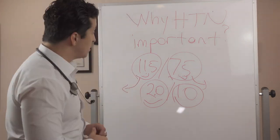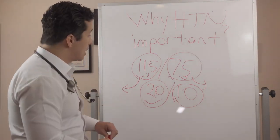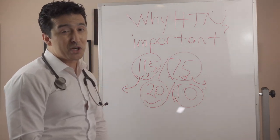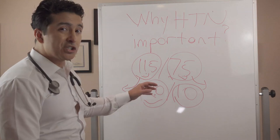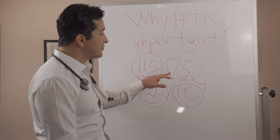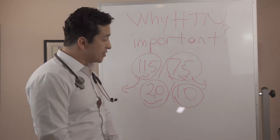So think about this. If you are someone who lived with a blood pressure of 135 over 85, although it sounds kind of pretty normal and innocent, you are still at double the risk of someone who has a blood pressure of 115 over 75.